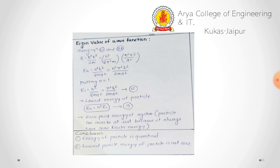Now we find the energy eigenvalue. Using k = nπ/a and E = ħ²k²/2m, substituting the value of k: E = ħ²(nπ/a)²/2m = n²h²/8ma². So Eₙ = n²h²/8ma², which can also be written as Eₙ = n²π²ħ²/2ma².